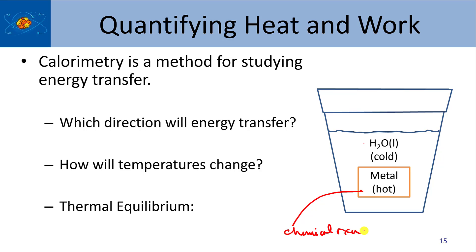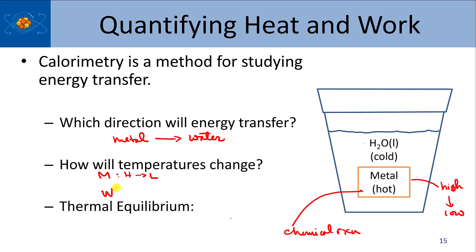Hopefully you're thinking about hot being more energy and cold being lower energy. Heat energy is transferred from the high temperature object to the low temperature object. So energy transfer will be in the direction of the metal to the water. The metal will be losing energy, so its temperature will go from high to low. For the water, it's going to go from a lower temperature to a higher temperature.